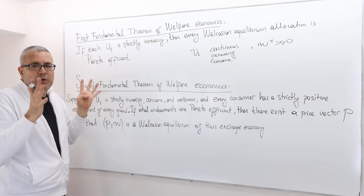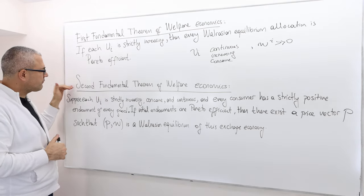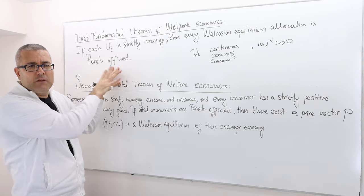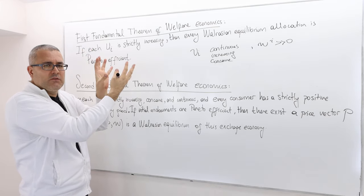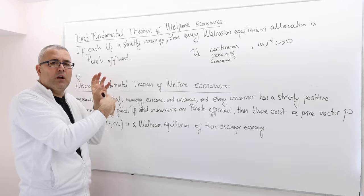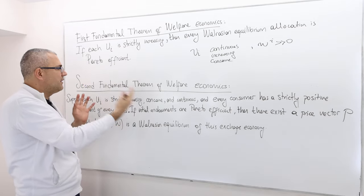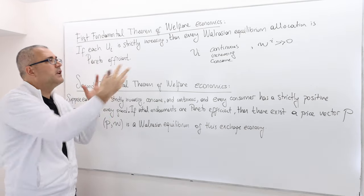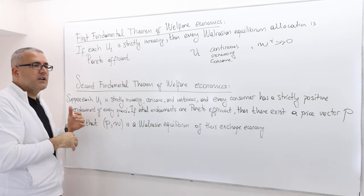The Second Fundamental Theorem of Welfare Economics is basically about the converse of what the first welfare theorem says. In the first welfare theorem, any Walrasian equilibrium is Pareto efficient. But can we say any Pareto efficient allocation is a Walrasian equilibrium outcome for some price ratio? In essence, the Second Welfare Theorem says this can be true — the converse can hold under a stronger set of assumptions.